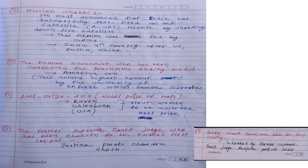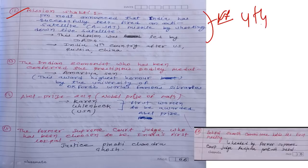Twelfth current affair: Mission Shakti — PM Modi announced that India successfully tested an anti-satellite (A-SAT) missile by shooting down a live satellite. India became the fourth country to achieve this capability, after the USA, Russia, and China.